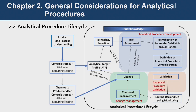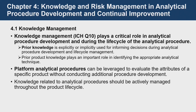If the ATP is defined, then the test method appropriate for that ATP must be selected. When using that method, the test method parameters should be checked, and the parameters must be confirmed with the set points or by setting the range of the tests. Regarding knowledge management, prior knowledge is explicitly or implicitly used for informing decisions during analytical procedure development, lifecycle, and management.